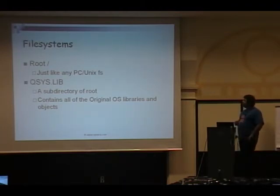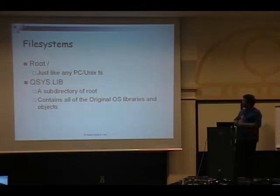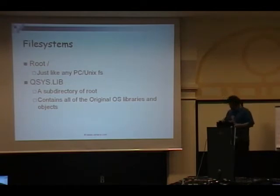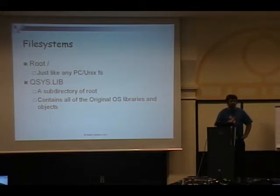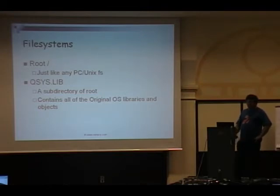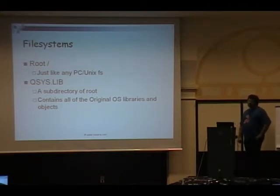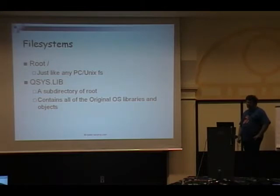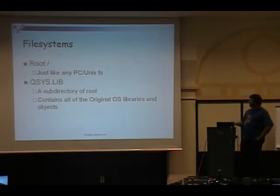There are two file systems. The root file system is like any commonly known hierarchical folder system — you can place text files, images, JPEGs, Word documents, EXE files, or anything you like in it, including AIX-compatible programs. Then there is the qsys.lib file system, a subdirectory of root, which provides access to the original AS/400 libraries, objects, programs, files, data areas, and everything within those libraries.